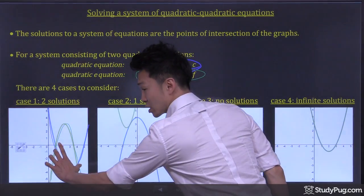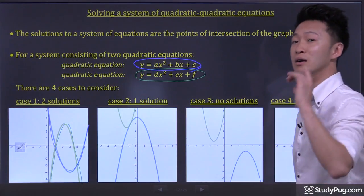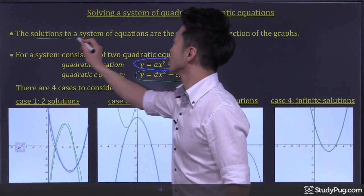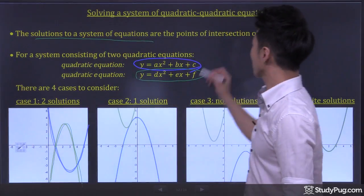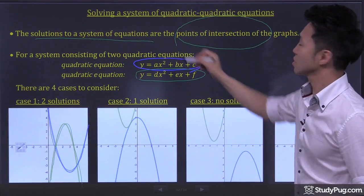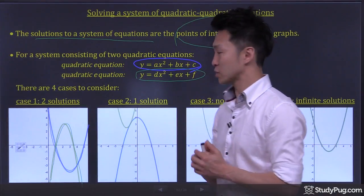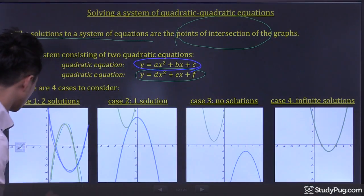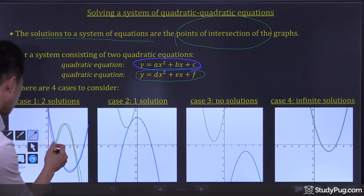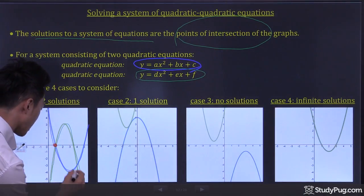The points of intersections represent the solutions to the system. So in this case, the solutions will be here and here.